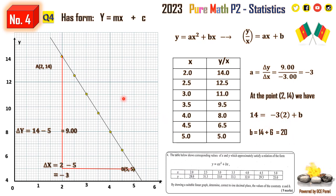From this equation, b is the y-intercept. If we extend this line and the paper was large enough, we would see the line intercept the y-axis at 20. Since the paper wasn't extended that far, we took a point along the line and substituted using the known value of a to find b.